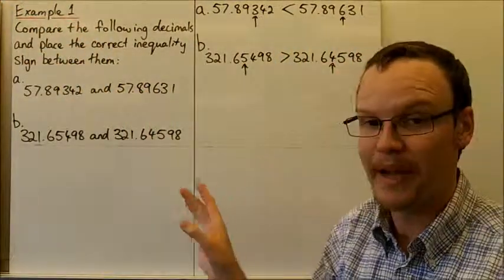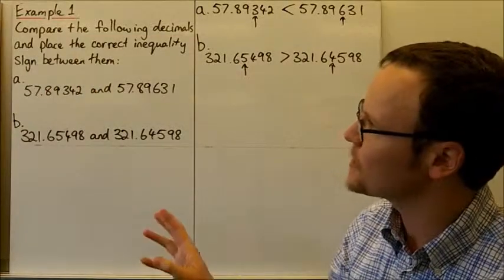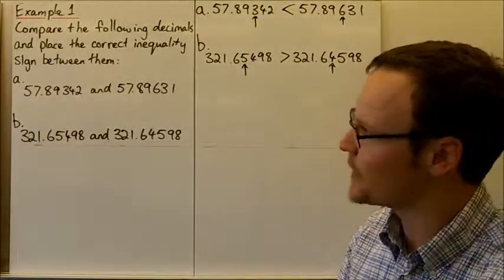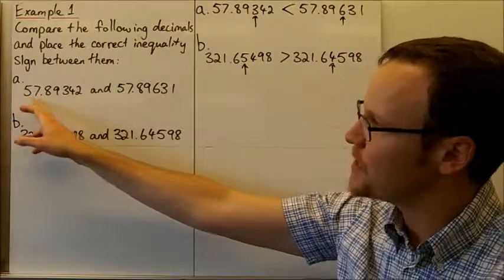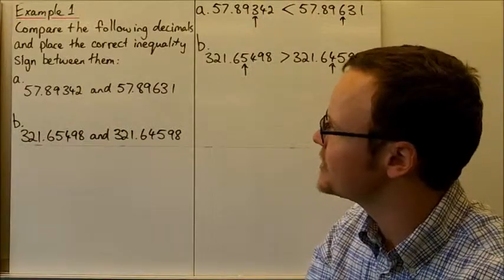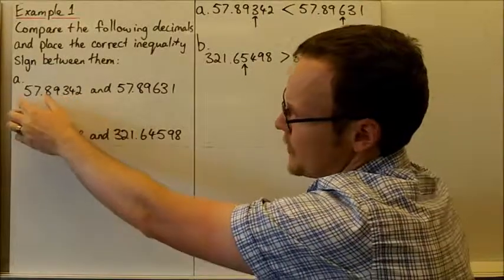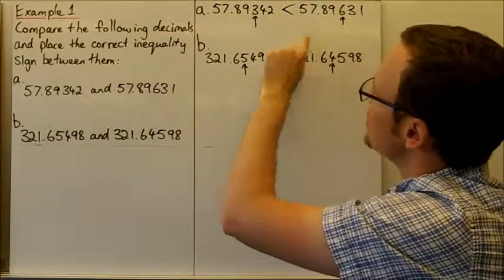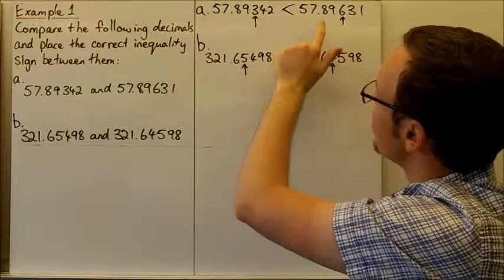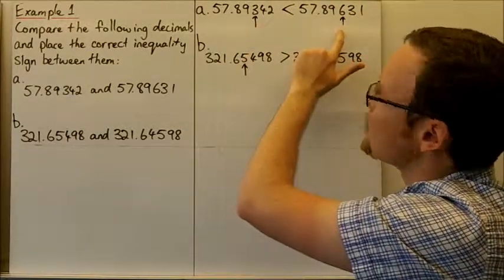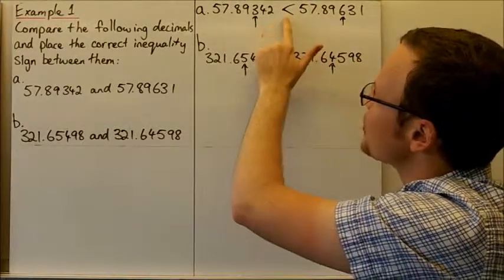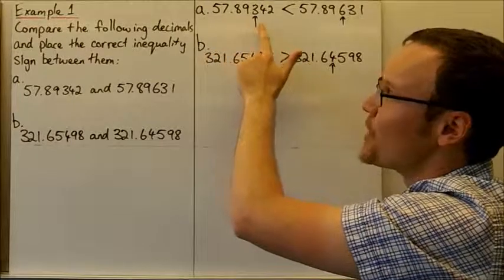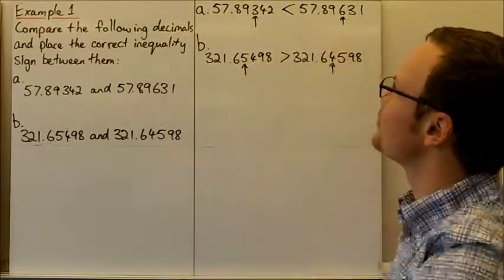For the first example, let's compare some decimals and place the correct inequality sign between them — that's greater than or less than. We've got 57.89342 and 57.89631. They're the same up until the thousandths column, where we've got 3 and 6. Since 6 is larger than 3, 57.89342 is less than 57.89631.